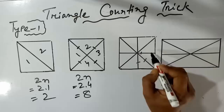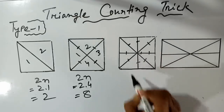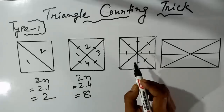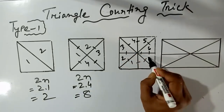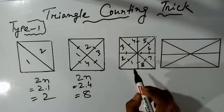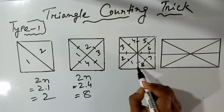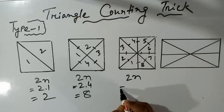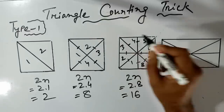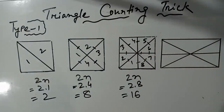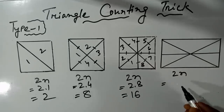Counting: 1, 2, 3, 4, 5, 7, 8 — then 12, 13, 15, 17, 18. Counting again: 1, 2, 3, 4, 5, 6, 7, 8. I will write down the total. I will write down twice n — 2 into n — and then 16. The total number of triangles is twice n.